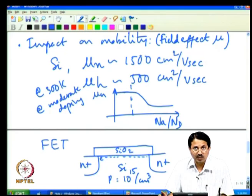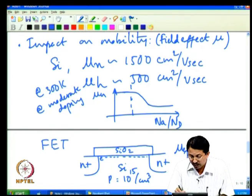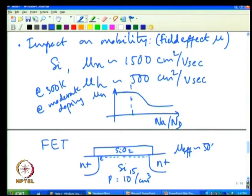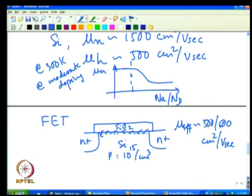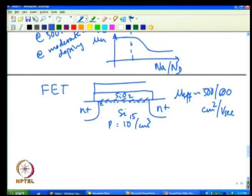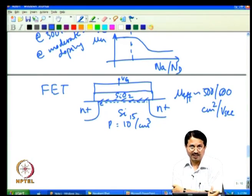The effective mobility is much lower — around 500–600 cm²/V·s — even at moderate doping, due to defects at the Si/SiO₂ interface acting as scattering sites. Additionally, applying larger gate voltage sets up a vertical electric field that pulls electrons toward the surface, causing more scattering and further reducing the ease with which electrons travel along the channel to the drain.